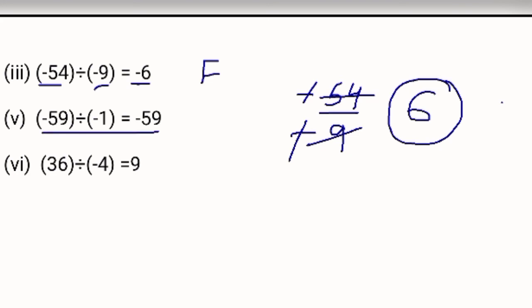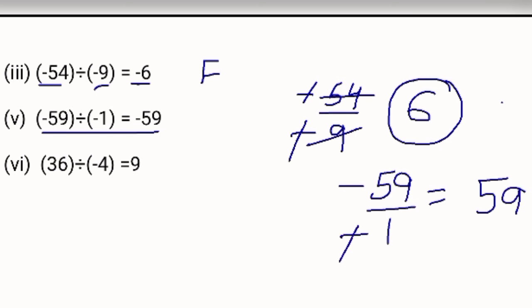In this one, when you divide minus 59 by minus 1 — when you divide any number by 1, you get the same number. In both numbers we have negative signs, so minus minus will be cancelled out, and the answer will be positive 59. But here they have given negative minus 59, so the answer will be false.